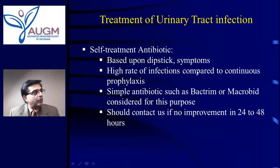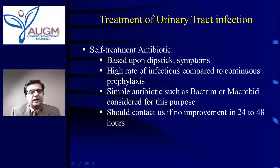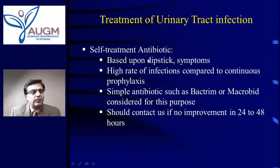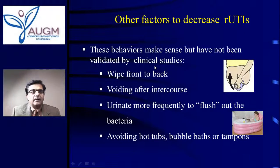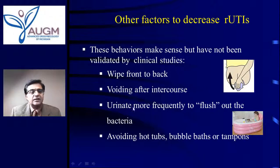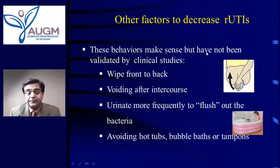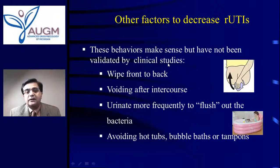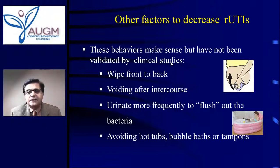Self-treatment with an antibiotic — should you do it on your own? If you are certain and getting infrequent bladder infections, you could do a dipstick. But the rate of infection recurrence is very high compared to continuous prophylaxis, and if symptoms don't improve you need to follow up. As for other behavioral measures — wipe front to back, urinate after sex, urinate more frequently to flush out bacteria, avoid hot tubs, bubble baths, or tampons — these all make sense. However, because I'm evidence-based, these are not validated by clinical studies. Some show benefit, some show no change. But these are simple, free practices that don't hurt — so why not wipe front to back?